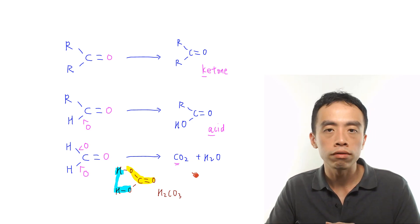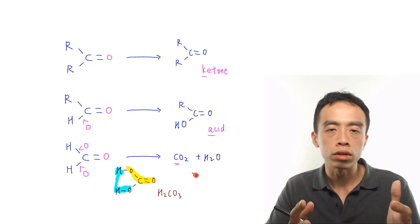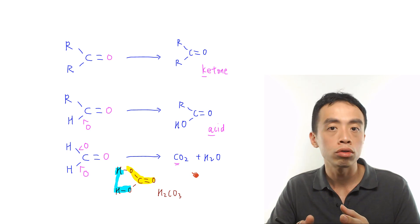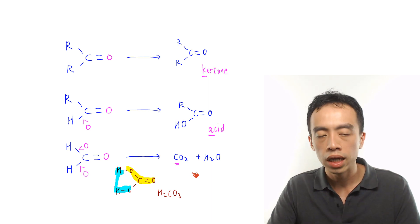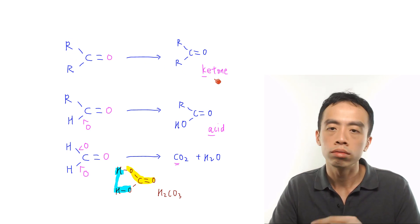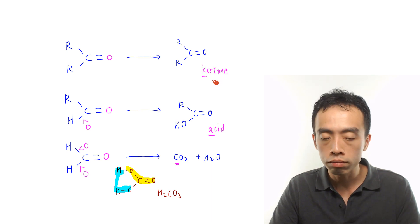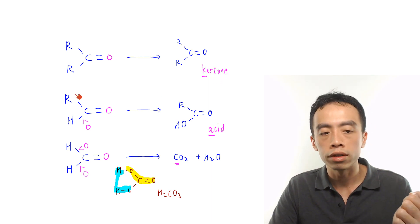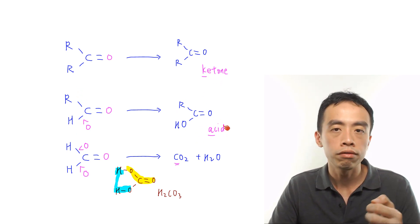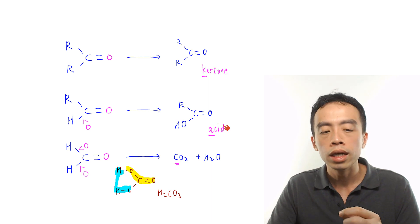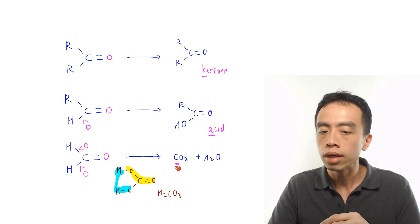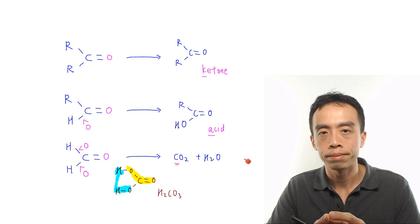This is fairly straightforward. Based on the groups attached to the alkene carbon: if it is R–R, it will be oxidized to K for ketone; if it is R–H, it will be oxidized to A for carboxylic acid; if it is H–H, it will be oxidized to carbon dioxide and water.